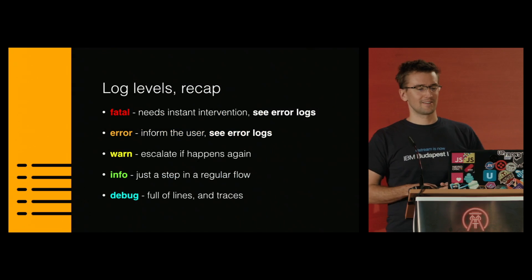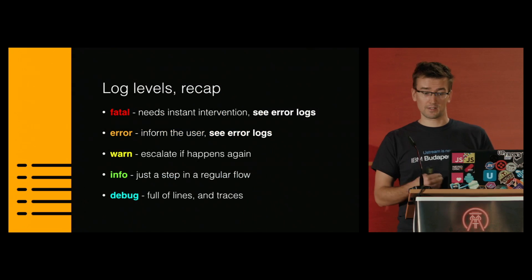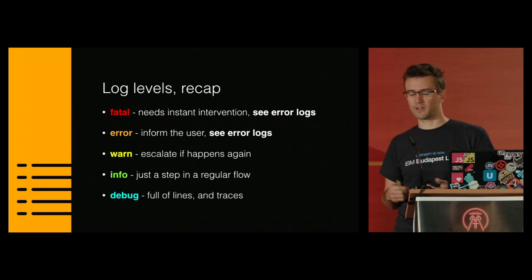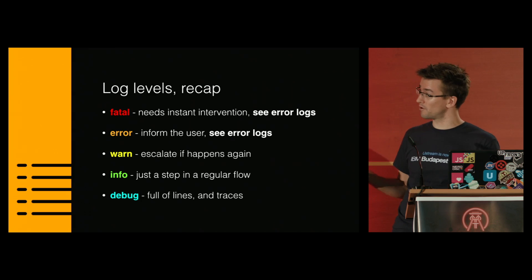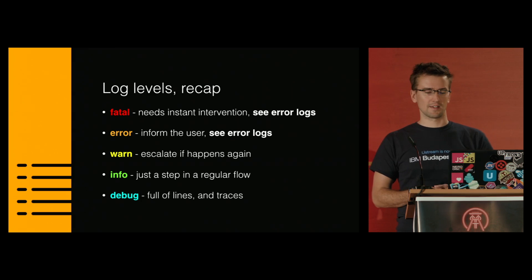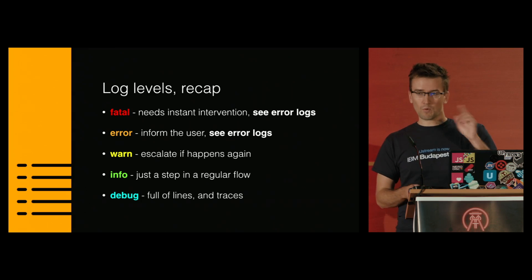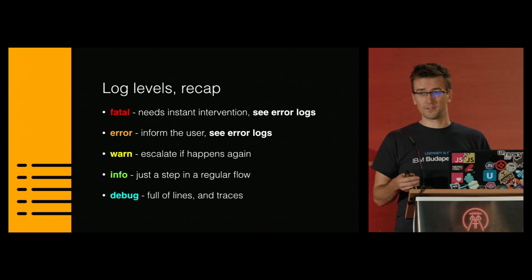Let's recap: Fatal needs instant intervention by the developer — we have to check the error logs. Error: we have to inform the user and check the error logs. Warn: we have to escalate if it happens again. Info is just a step in a normal workflow — everything is alright. And Debug: fill the console with lines and stack traces. Use them wisely where they are really needed, because if every error is fatal, then none of them are.